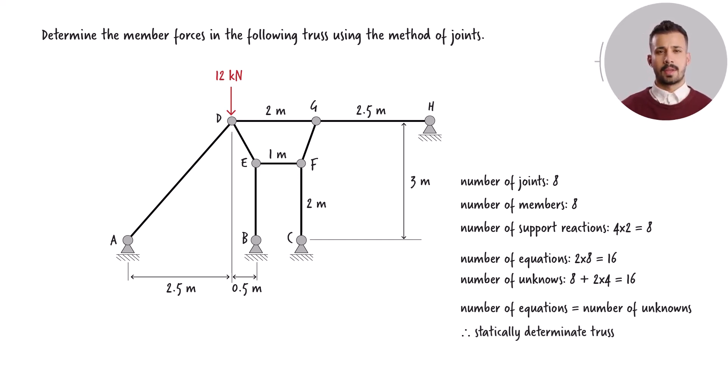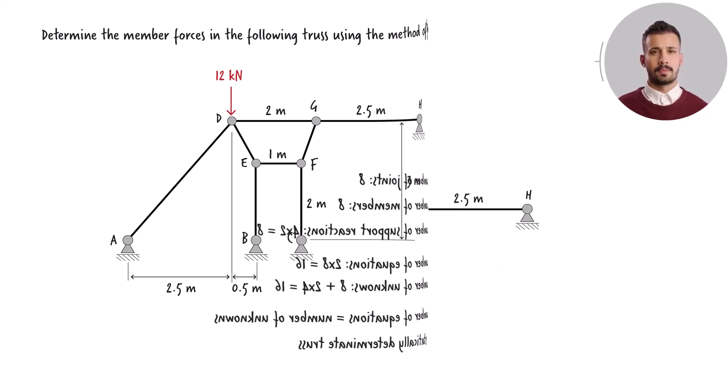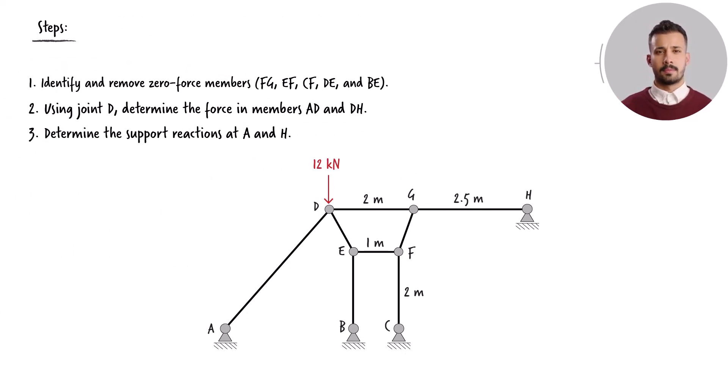Examining the geometry of the truss, I see a few zero-force members being present. To simplify the solution process, I will identify and remove the zero-force members from the structure. Then I'll apply the joint equilibrium equations to determine the non-zero member forces. Once the member forces are determined, I'll use joint equilibrium equations to determine the non-zero support reactions.